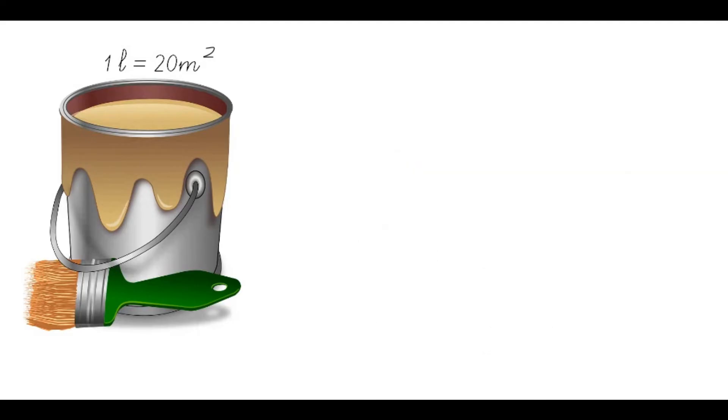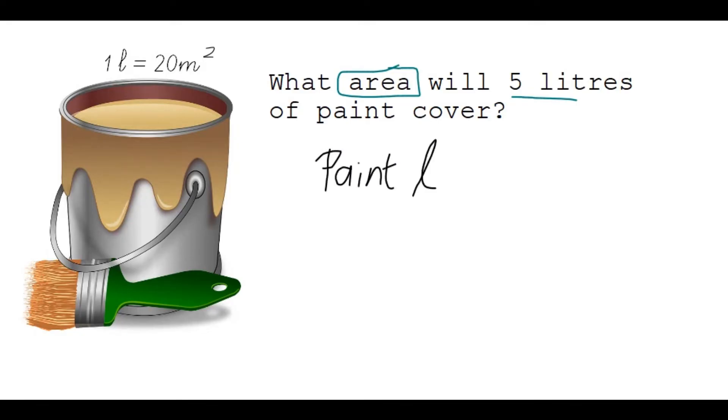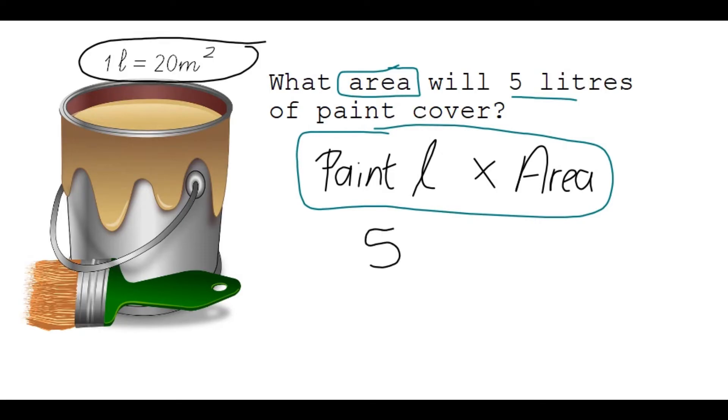Let's go to the second type of question. What area will 5 liters of paint cover? So I am now looking for the area. When you get a question like this, you take your amount of liters that they give you in the question and you multiply that by the area. It's quite simple if you think about it, because if I have one liter that covers 20 square meters, then 5 will cover 5 times 20 square meters, which gives me 100 square meters.